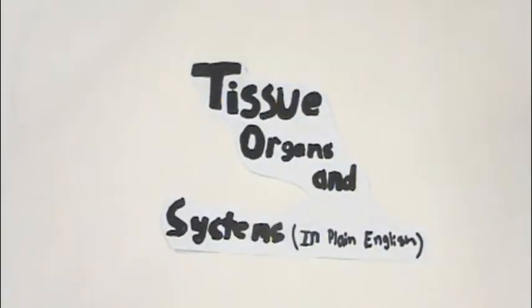Hello, I'm going to be talking about the four types of tissues: muscle tissue, nervous tissue, connective tissue, and epithelial tissue. Also, we will be talking about organs and systems. This is tissues, organs, and systems in plain English.